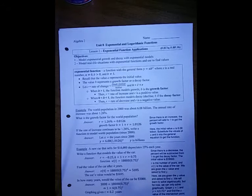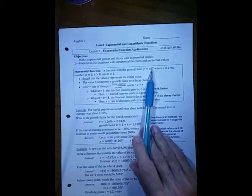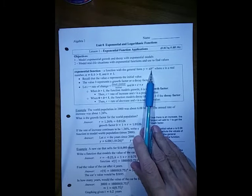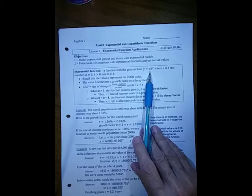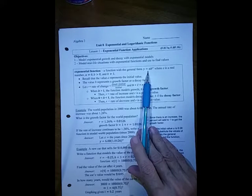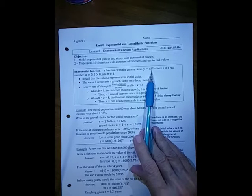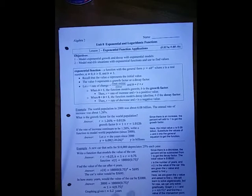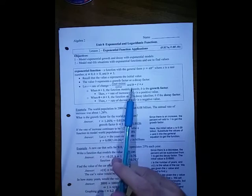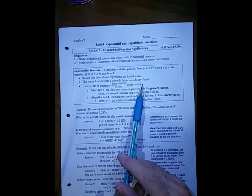The general form is y equals a times b to the power x, where b is a positive number. It shows growth if b is bigger than 1, and decay if b is a fractional value between 0 and 1. The initial value is a, and b is either the growth or the decay factor. If we are given a percent of increase or decrease, that's related to the growth or decay factor, r being the rate of change. b is 1 plus that.